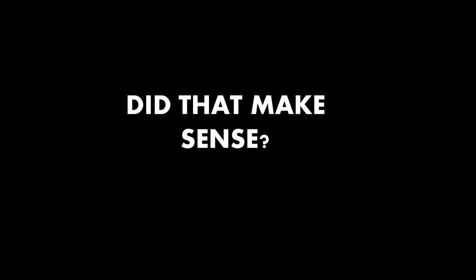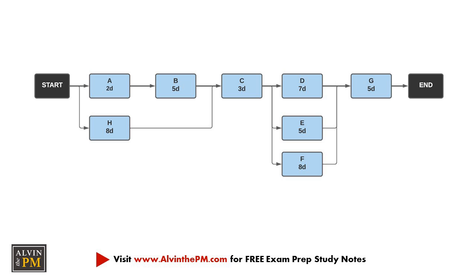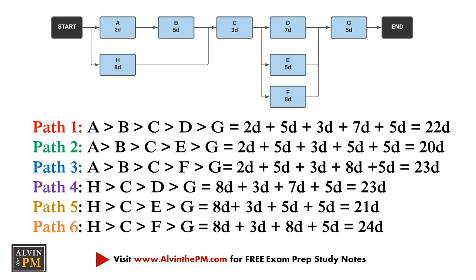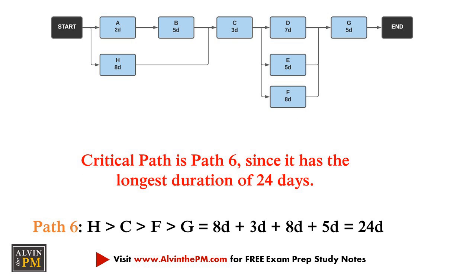Leave a comment down below if you have any questions with how to use this strategy. On the other hand, if you were to figure out the critical path by determining all of the sequences through the entire diagram, you'd obtain six total paths, and the critical path would be path 6, since it has the longest duration of 24 days.